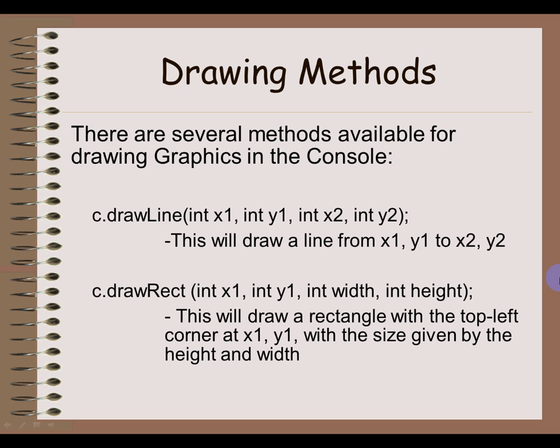So what methods do we have at our disposal for drawing graphics in a console? Well, the first one is called drawLine. DrawLine requires four parameters. The x, y points for one point and the x, y values for a second point. And then it connects those two points with a line.